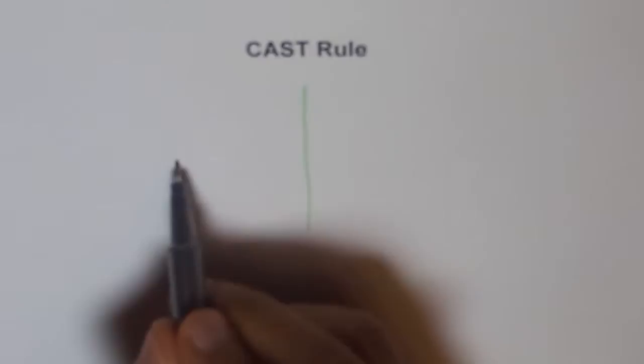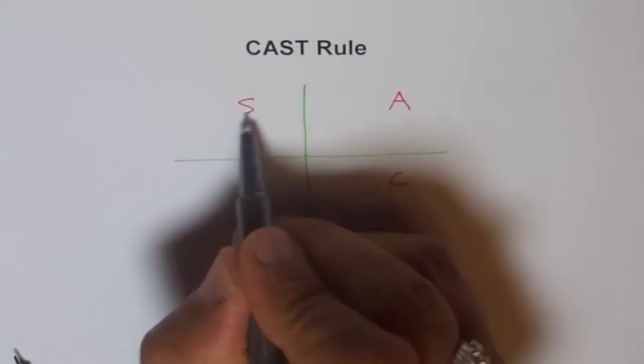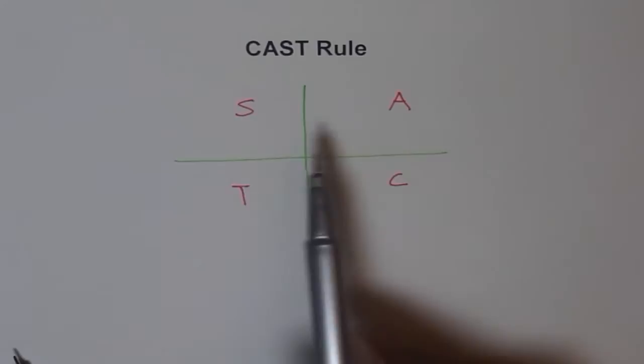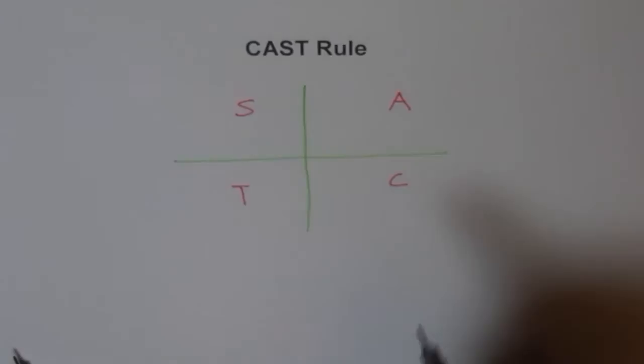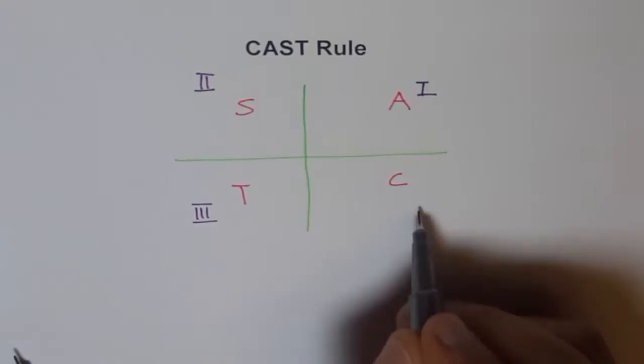The CAST rule simply means that you write from quadrant 4: C, A, S, T — CAST. It shows in which quadrant what trig function is positive. That is what it shows. It starts with quadrant 4. You know the quadrants? This is quadrant 1, this is quadrant 2, quadrant 3, and quadrant 4.